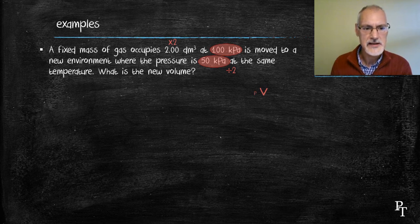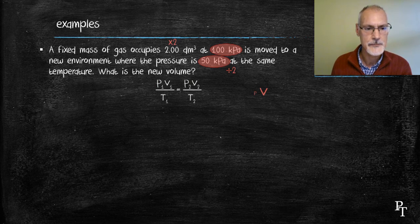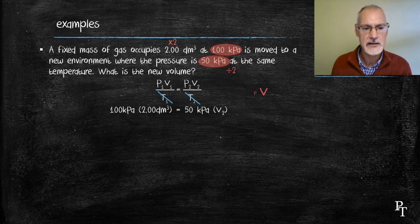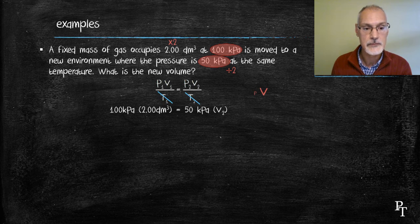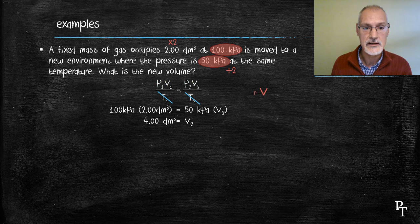I can also obtain that same answer by using the equation. Here, I note in the question that the temperature is constant, so I cancel it out. I substitute in my initial conditions, 100 kilopascals and 2 decimeters cubed, and my final conditions, 50 kilopascals and V2. Isolating for V2, I get 4 cubic meters, or 4 cubic decimeters. The same answer I would get just by applying Boyle's law.